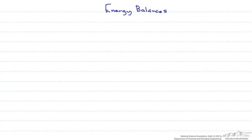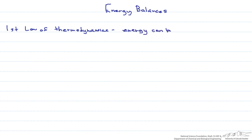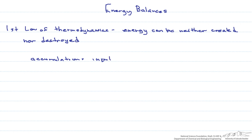This screencast is going to be about energy balances. Energy balances are similar to material balances since both mass and energy are conserved. If you take a look at the first law of thermodynamics, it states that energy can be neither created nor destroyed. Probably the best way to state this is that accumulation equals input minus output. We've seen a similar balance when we've talked about material balances.